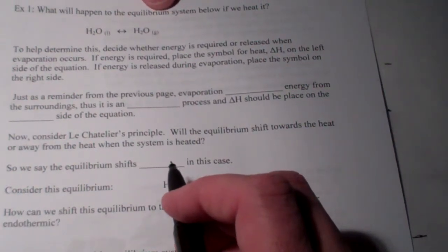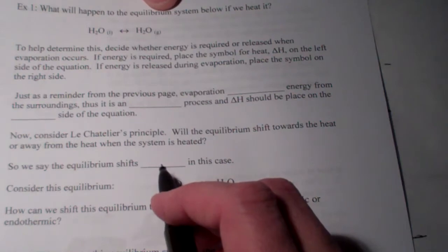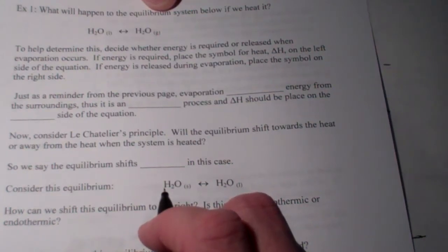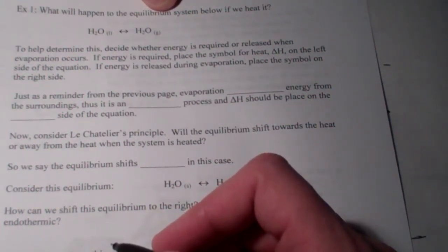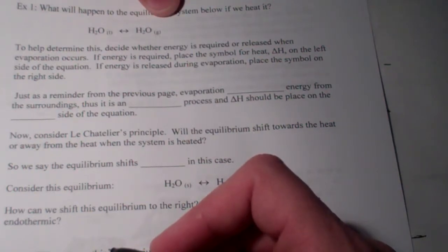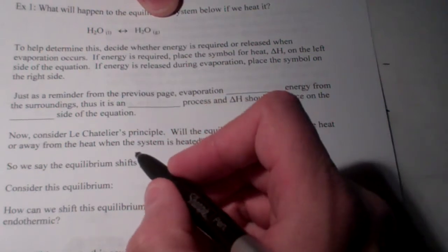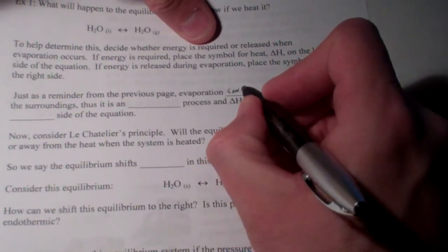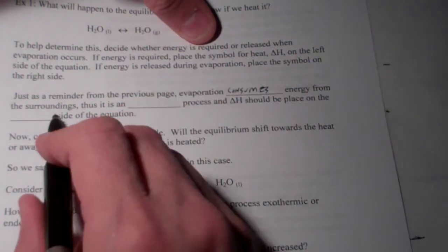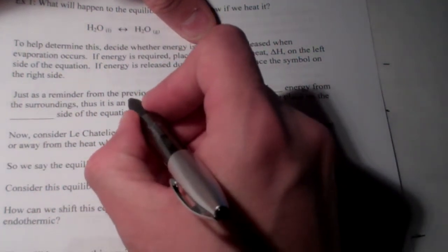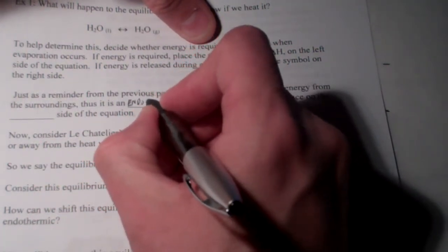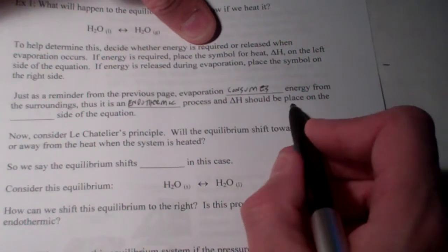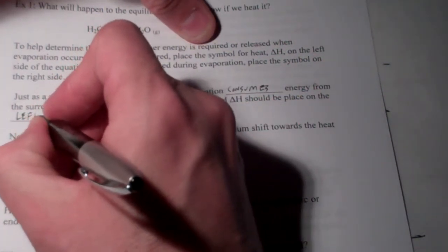Think about what evaporation is from our previous discussion. Remember, when you get out of a swimming pool on a hot summer day, what do you start to do? You're drenched with water, even though it might be 90 or 100 degrees outside, you begin to shiver. Why do you begin to shiver? Because evaporation is a cooling process. It consumes energy. So, evaporation consumes energy from the surroundings. Thus, we call it an endothermic process.